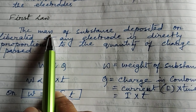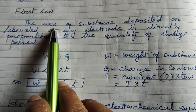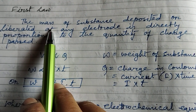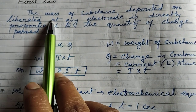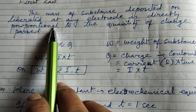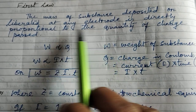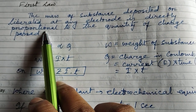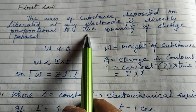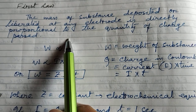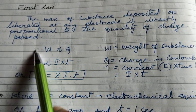Two laws are there for Faraday's laws of electrolysis. The first law states that the mass of substance deposited or liberated at any electrode is directly proportional to the quantity of charge passed.